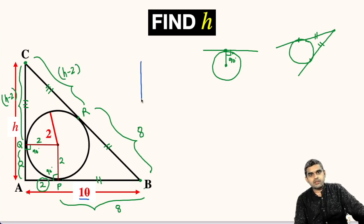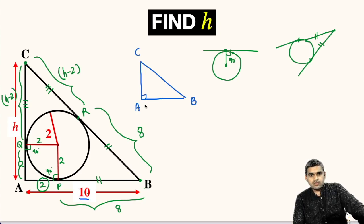Now, let us focus on this right triangle ABC once again. This point is C, this is A, this point is B and at A this is 90 degree. AB length is given to us as 10 units.